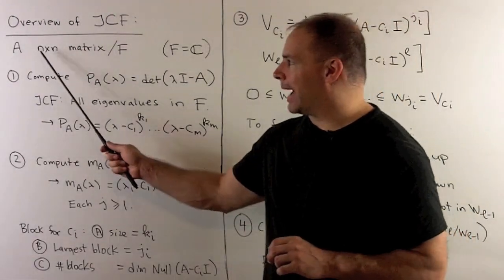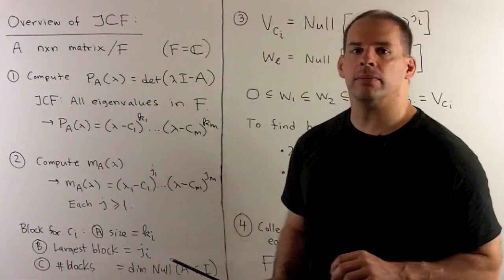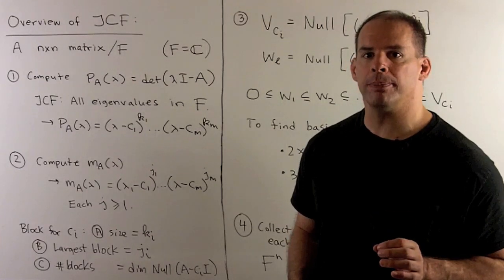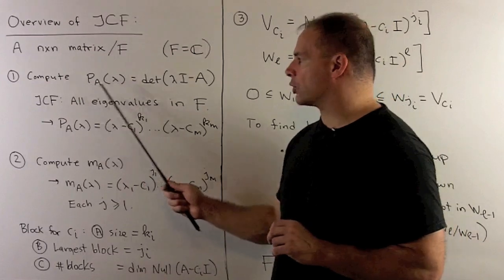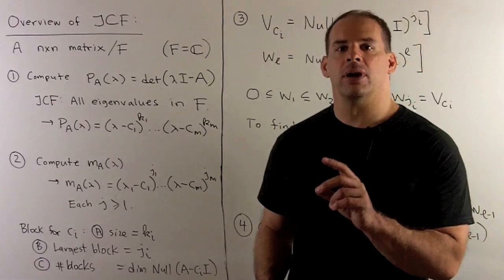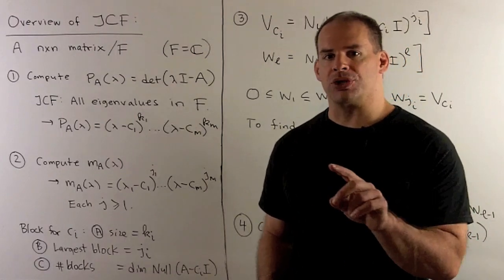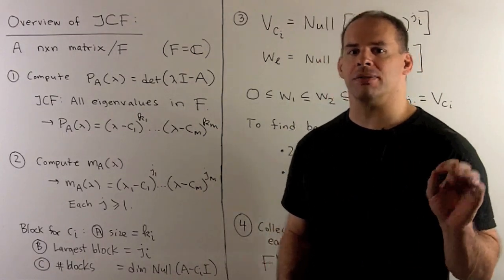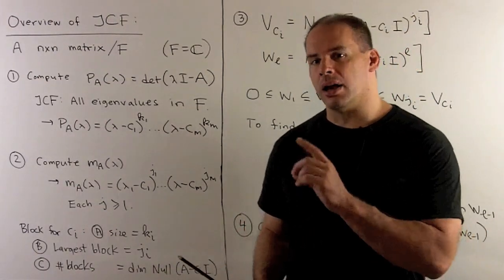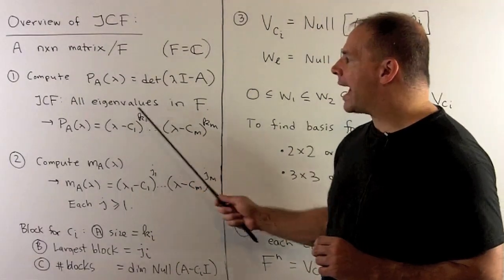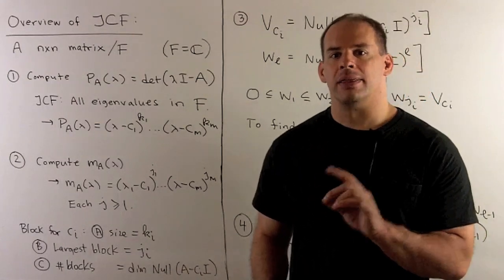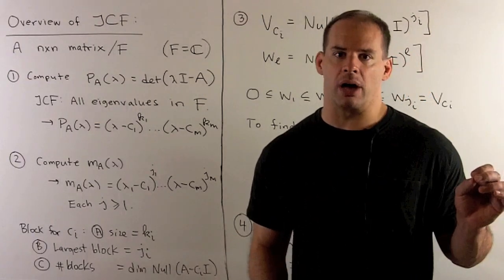We'll have an n by n matrix A over some field F. If F is the complex numbers, we can always put our matrix A in Jordan canonical form. We start by computing the characteristic polynomial of A — that's the determinant of lambda I minus A. If we can factor the characteristic polynomial completely into powers of linear factors, then we can use Jordan canonical form. Another way to say that: all eigenvalues are going to live in our base field. If this condition fails, then we have to use another canonical form such as rational canonical form.